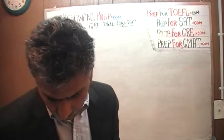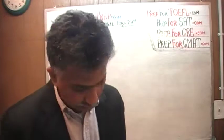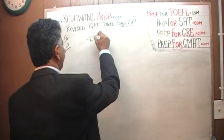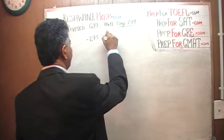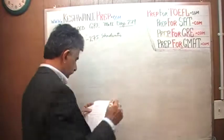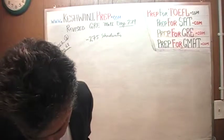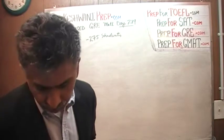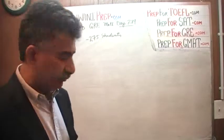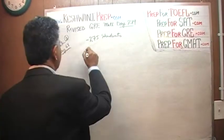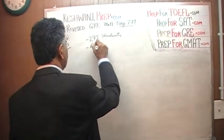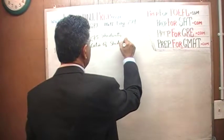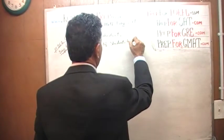Let's take a look at it. We are told that there are 275 students in the field of engineering. Approximately, what is the ratio of the number of students in engineering to the number of faculty in engineering? They are looking for the ratio of students to faculty.